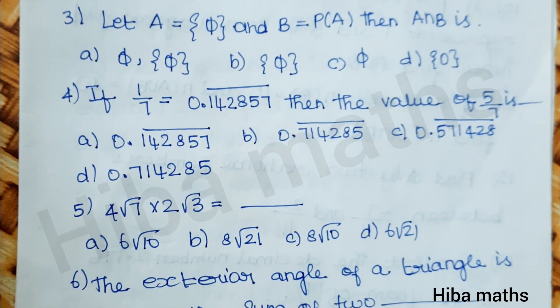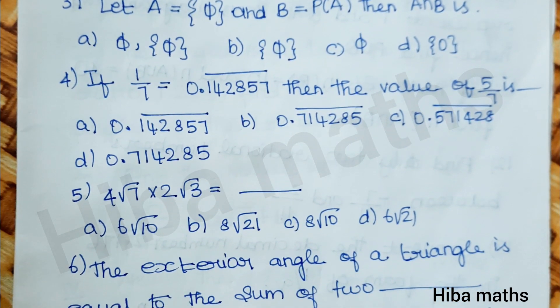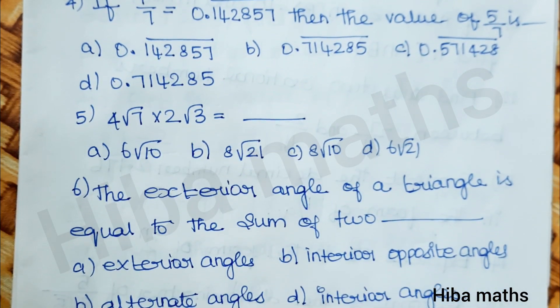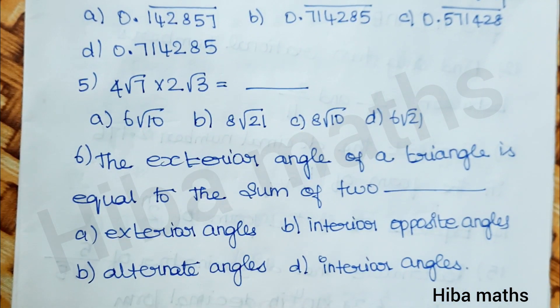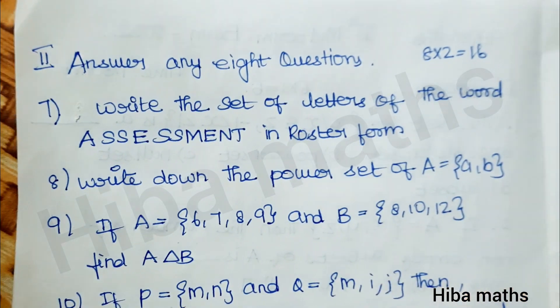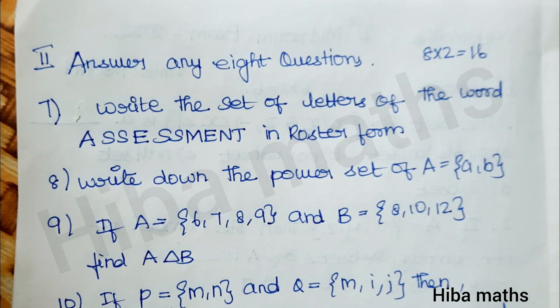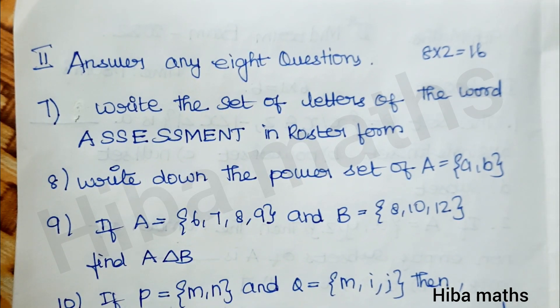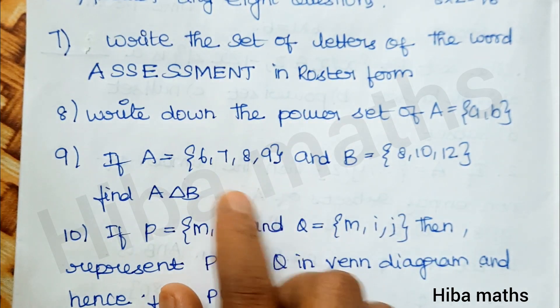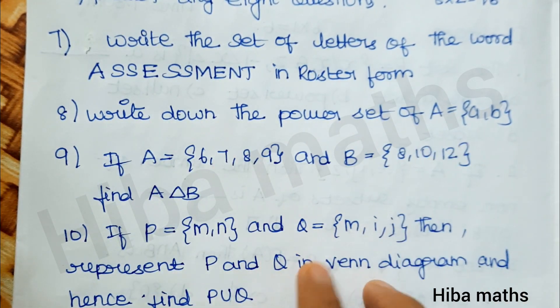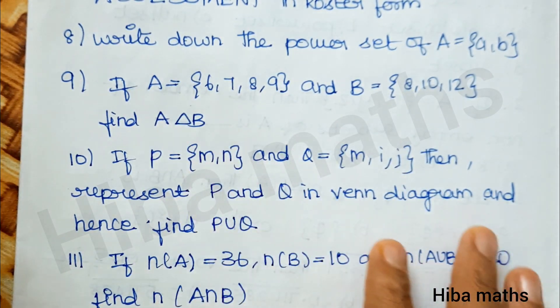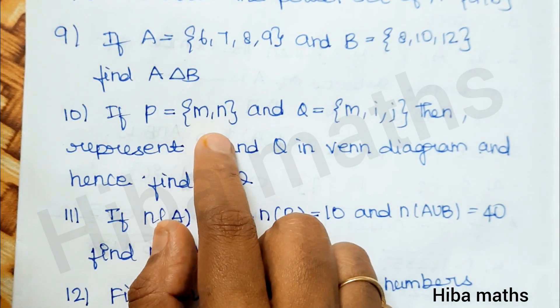Answer any 8 questions - 8 times 2 is 16 marks. Questions include: Write the set of letters of the word 'assessment' in roster form. Write down the power set. Answer A symmetric difference B.